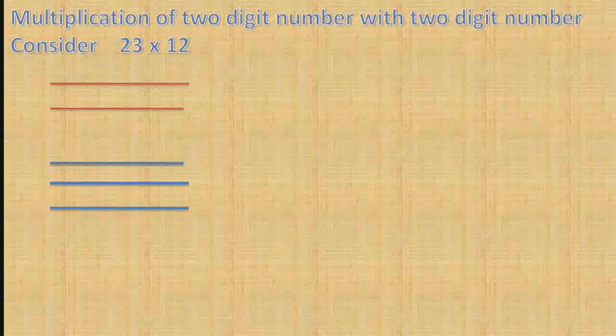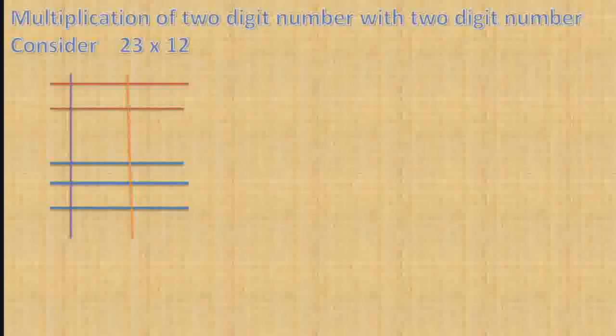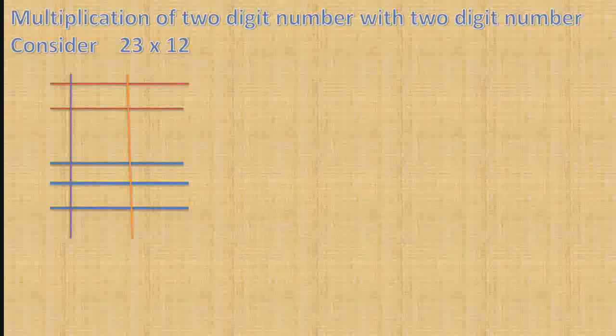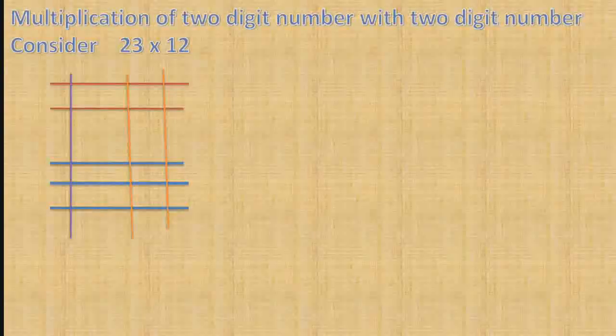For number 12, draw one vertical line and by leaving space, draw two vertical lines. Now, count the points of intersection of the lines.